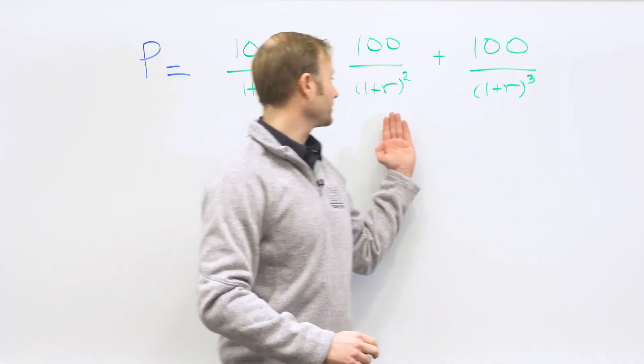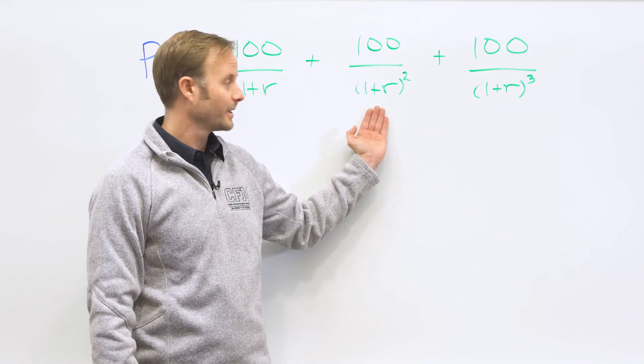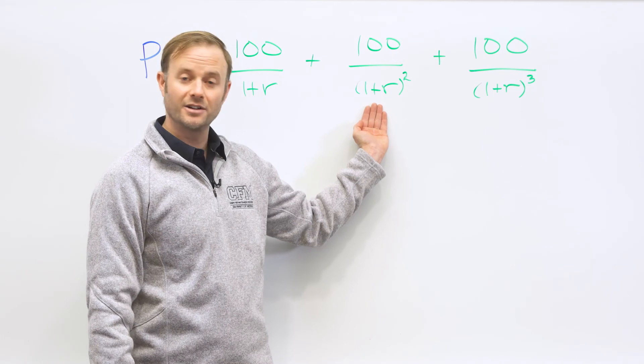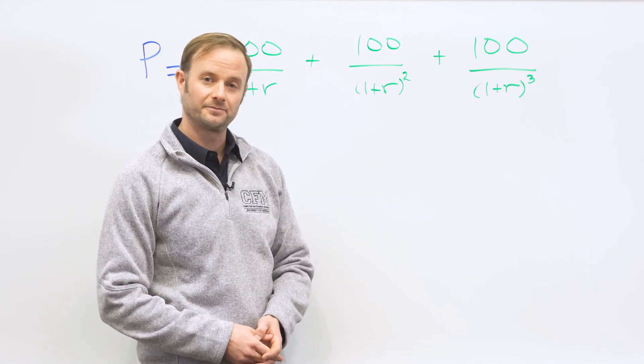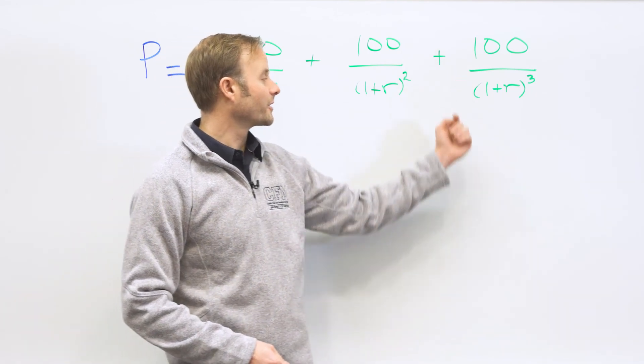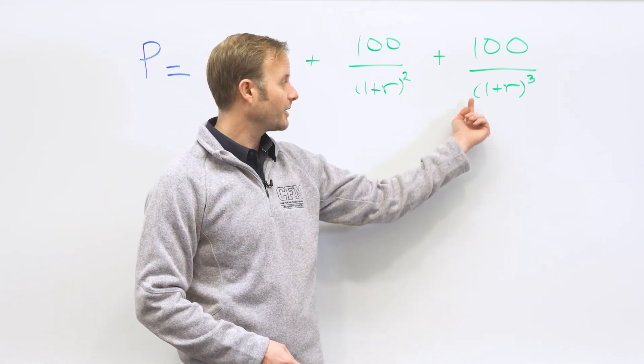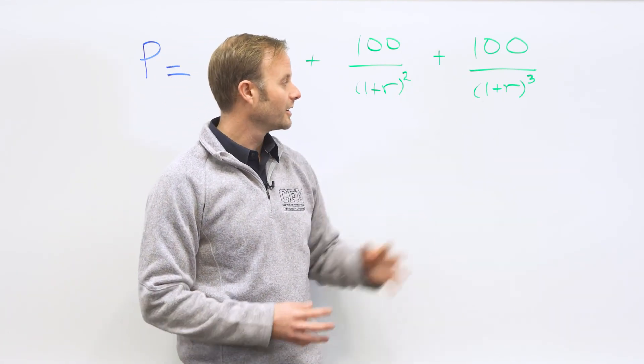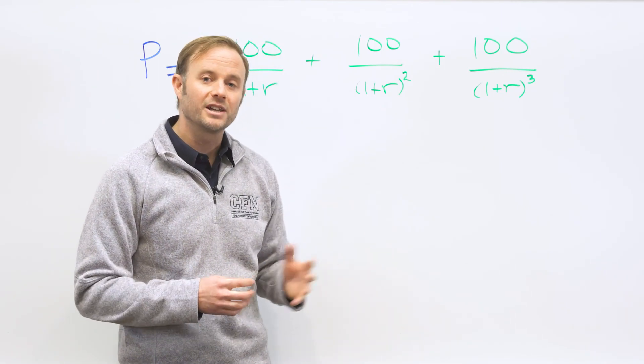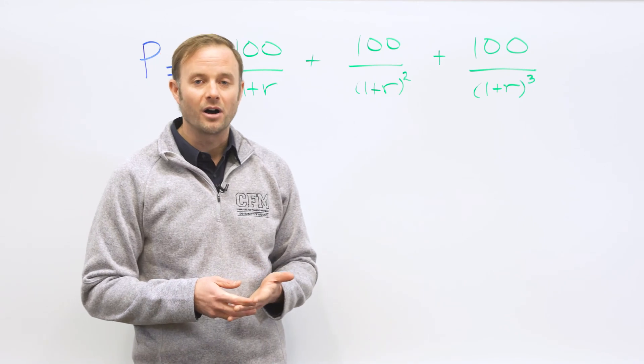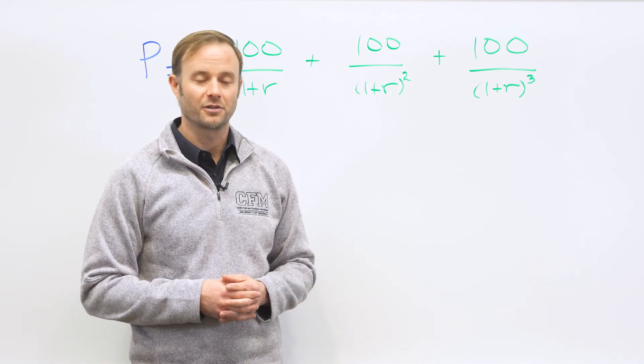The second $100 that you're going to get, you're going to take $100 and you're going to discount it back twice, you're going to divide by 1 plus R squared. The third $100 you're going to get in three years, well, simple pattern here, 1 plus R cubed. Add those three together and you get the value of a bond which pays $100 for three years.